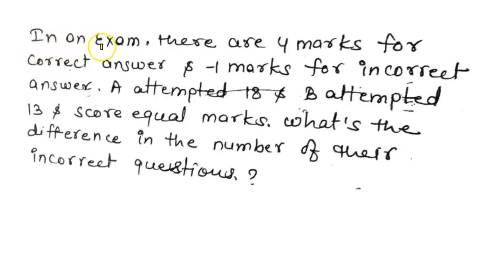Hello, this one is a fairly based question. According to this question, in an exam there are 4 marks for correct answer and minus 1 mark for incorrect answer. A attempted 18 and B attempted 13, and they scored equal marks. What is the difference in the number of their incorrect questions? Here we have to tell the difference of how many questions they attempted in their incorrect questions.